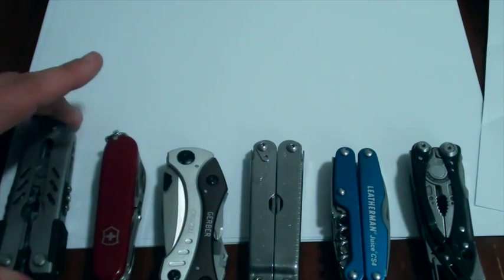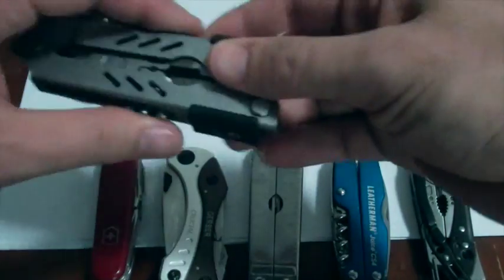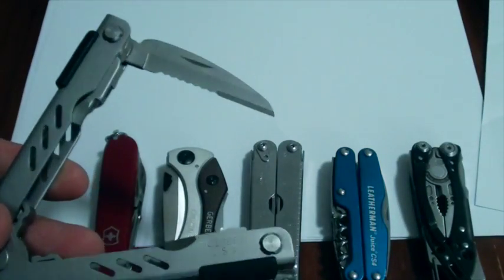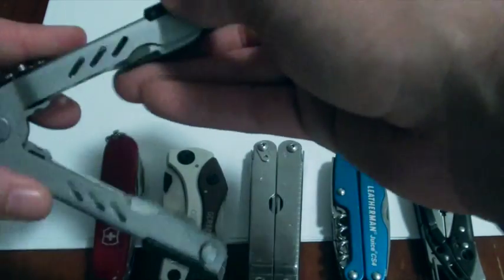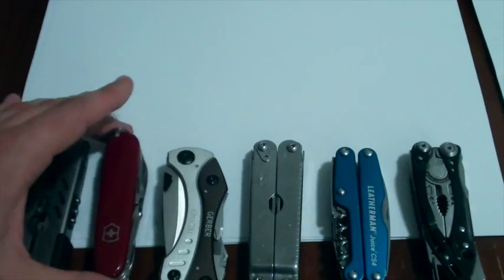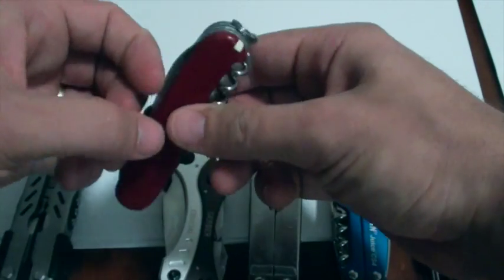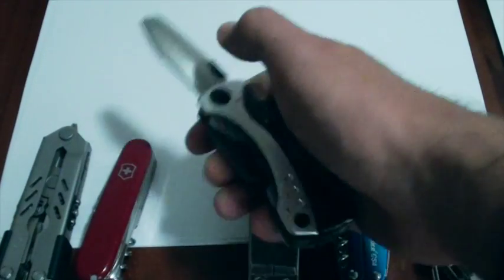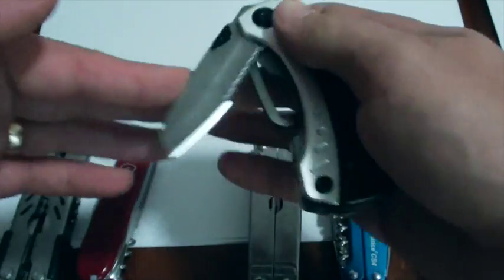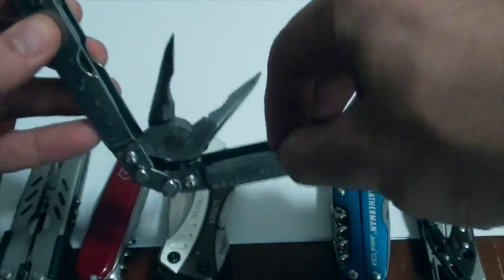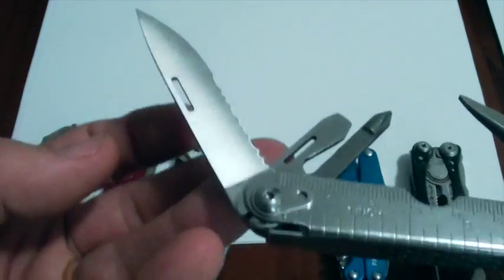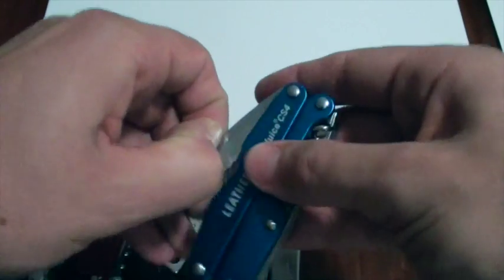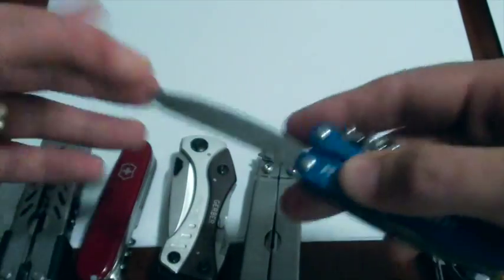The blade in the Gerber MP600 is a part serrated blade, which is fairly average. There you go. It is locking, but it's not easily accessible. The Victorinox Explorer has your standard Victorinox blades, so just a slip joint, stainless steel. Gerber Crucial has a one-hand opening, part serrated sheep's foot slash reverse Tanzo blade. The newest model is a little bit shorter, but that doesn't affect the overall score.